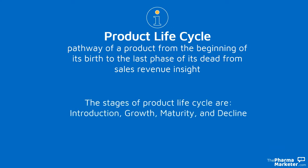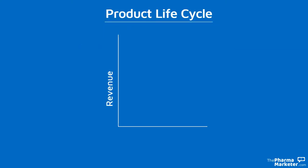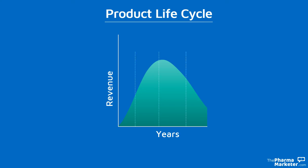There are four stages in the product life cycle: introduction, growth, maturity, and decline. By plotting the revenue on the y-axis and the time on the x-axis, the product life cycle curve is as shown on the screen, divided into these four phases: introduction, growth, maturity, and finally decline.